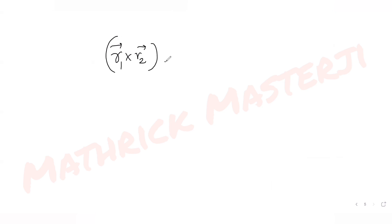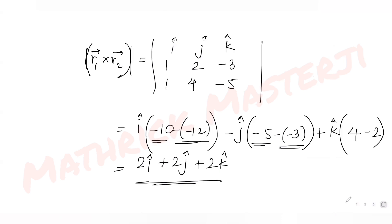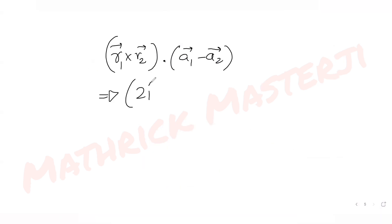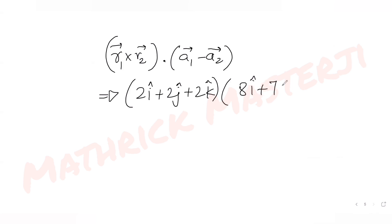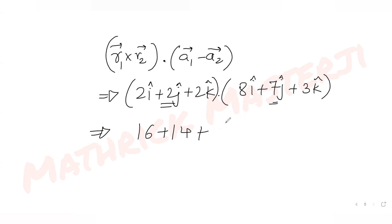For the numerator, we need the dot product of (r1 × r2) with (a1 − a2): that is (2i + 2j + 2k) · (8i + 7j + 3k). Computing: 2×8 = 16, 2×7 = 14, 2×3 = 6. Adding them gives 16 + 14 + 6 = 36.